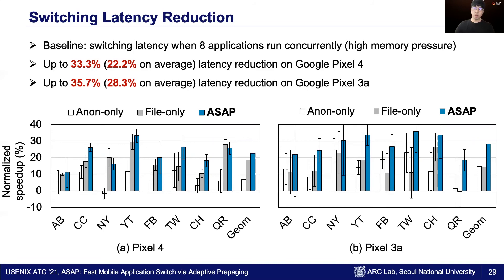As a result, ASAP achieves latency reduction up to 33.3% and an average of 22.2% on Google Pixel 4. And ASAP achieves a similar level of latency reduction on Pixel 3a. The result also shows that pre-paging for each type of page contributes to the latency reduction, demonstrating that ASAP's pre-paging technique works effectively on real devices.